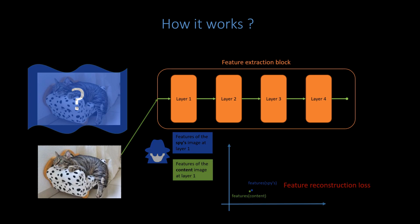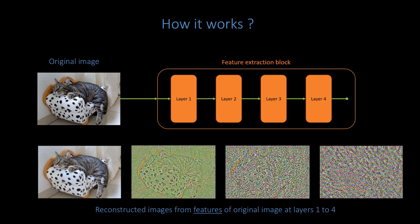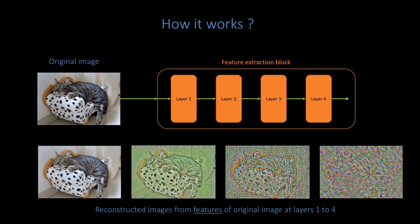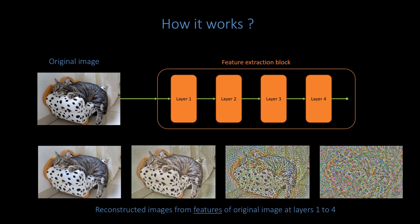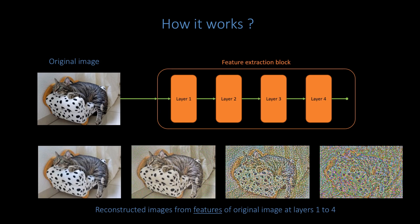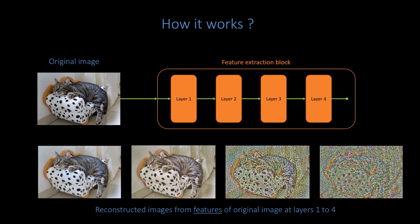By iterating this process a few times, the spy finally constructs an image having almost the same features as the content image. We can apply the same image reconstruction technique for the other layers. This is what we get. Not surprisingly, as we progress in the layers, we lose more and more pixel information, but notice that the high level content, like the shape of the cat or the dalmatian spots, is preserved, even in the last layer.